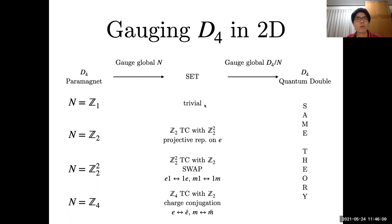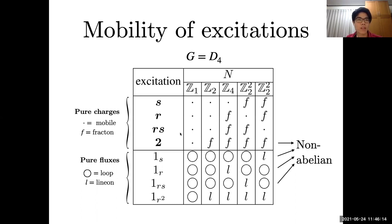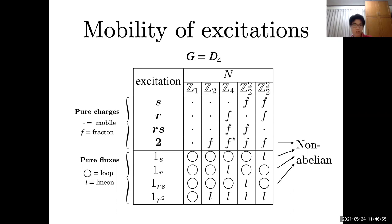Regarding the different excitations: as long as you choose a non-trivial normal subgroup N, you always get a fracton. Otherwise, all charges are mobile and you just have a 3D quantum double model. The other excitations are abelian charge excitations — irreps of D4 — and depending on the normal subgroup chosen, they can have different mobilities. For example, if N = Z2, all abelian charges are mobile, whereas different choices give different fracton excitations. Similarly, like the abelian hybrid X-cube model, there are also loop excitations and lineon excitations labeled by conjugacy classes, and the choice of normal subgroup determines their mobilities.